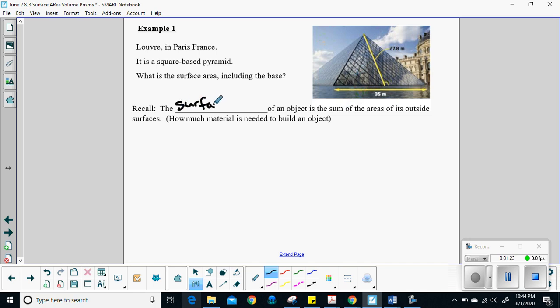So let's just remember, surface area is the sum of the areas of its outside surfaces. So here I've got four triangles on the outside. It's going to be our four outside triangles. So they've got, let's see, I've got a 35-meter base, and I have a height of, what's the question telling me? 27.8 meters.